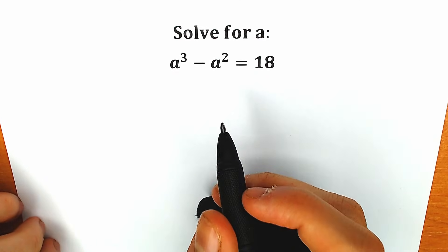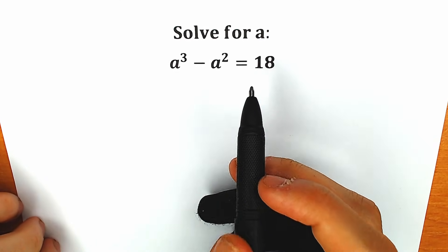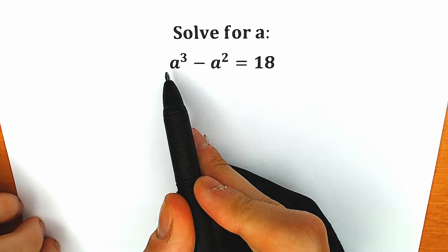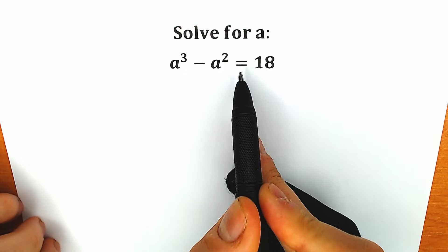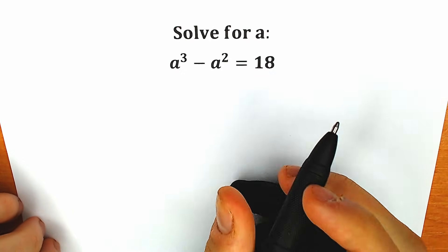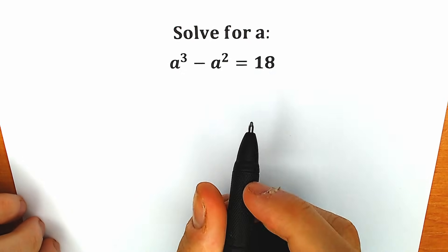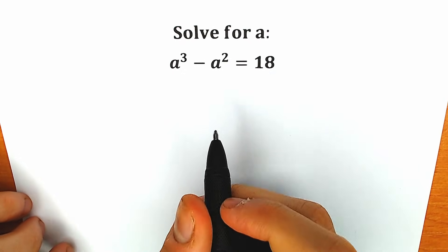Hello everyone, happy to see you here. Welcome back to my channel. Today we have a very interesting cubic equation: a³ minus a² equals 18. Of course you can write your solution in the comments below and then we will check our answers.